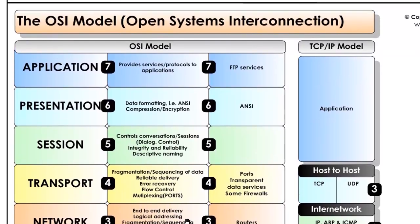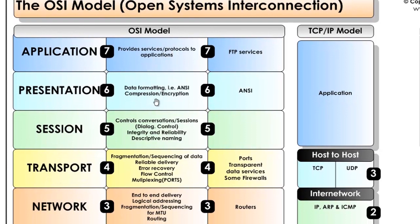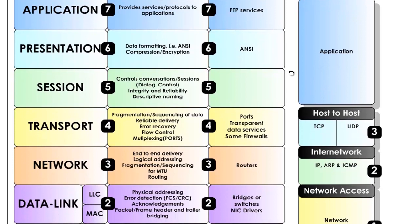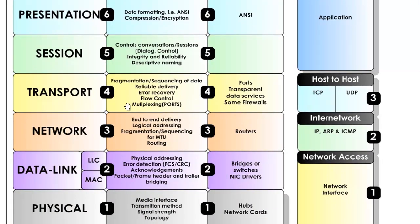Each layer provides specific services: the application layer handles service, data formatting, control, and conversion. Examples include FTP and ANSI data formatting. The transport layer handles fragmentation, sequencing, reliability, error recovery, flow control, and multiplexing, controlling the two protocols TCP and UDP. The internet layer handles end-to-end delivery, logical addressing, MTU fragmentation, and routing using protocols like IP, ARP, and ICMP.